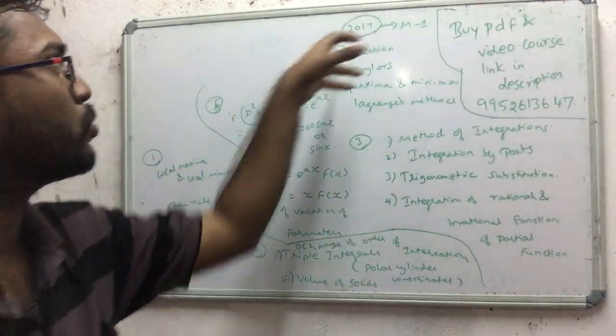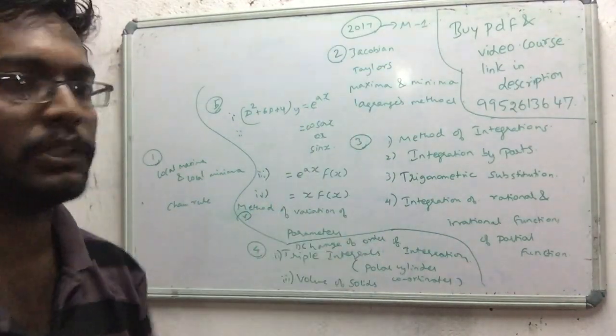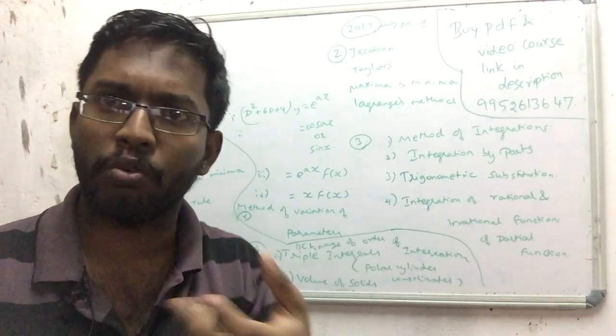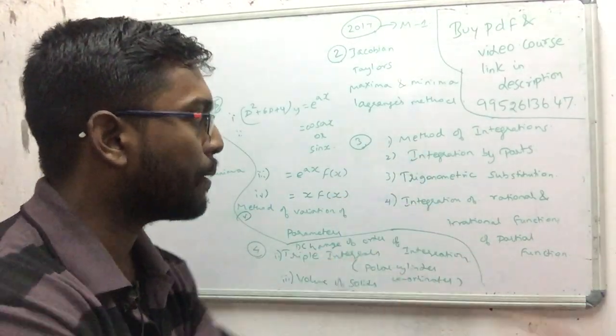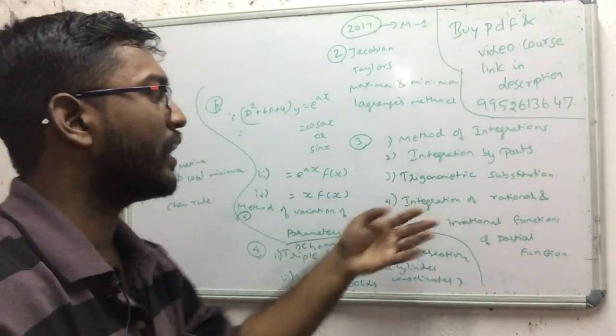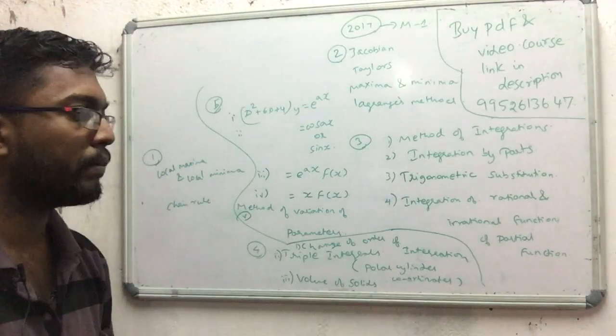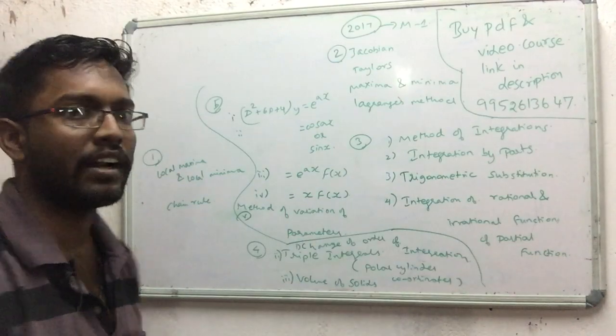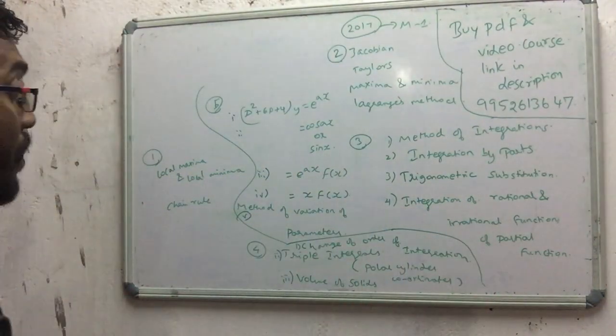2 units in 2017 regulation. Jacobian, Taylor, Maclaurin, Lagrange method. All the videos on youtube channel are available. Method of integration, integration by parts, trigonometric substitution, rational and irrational function of partial function. 4th unit is change of order of integration, triple integral, full of cylindrical coordinates, volume of solids.